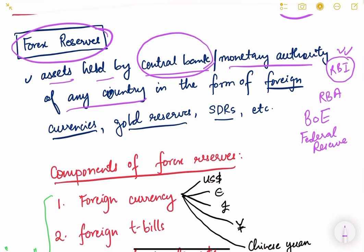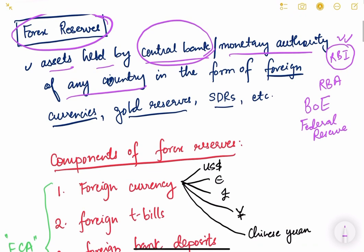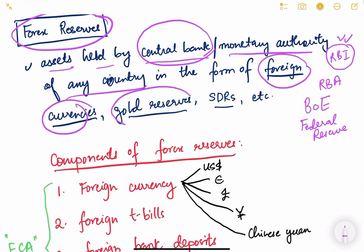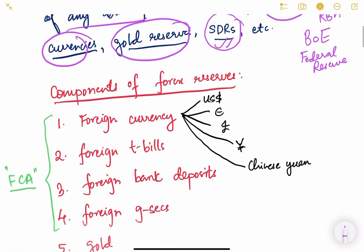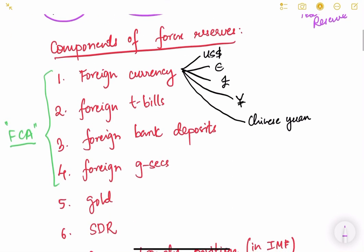The assets held by these monetary authorities in the form of foreign currencies, gold reserves, or SDRs — Special Drawing Rights, which is the reserve currency created by the IMF — all constitute forex reserves. Now let us look at the different components of forex reserves.